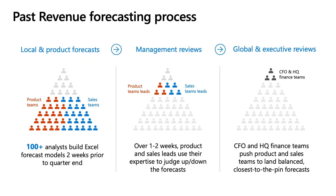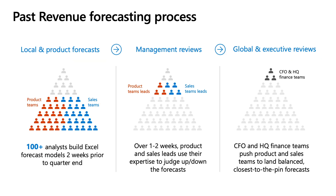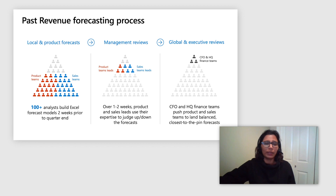The past revenue forecasting process was such that several analysts — 100 plus — would create a forecast using Excel models. They would interact among themselves and produce these forecasts. The Excel model forecasts would then go to management review, where the management team would adjust the forecast up or down based on their insights. Finally, the CFO and HQ teams would push product and sales teams to land the closest-to-the-pin forecast. These forecasts lacked a common nomenclature, definition, or standardization, and there was no unbiased machine learning forecast to provide additional insights.